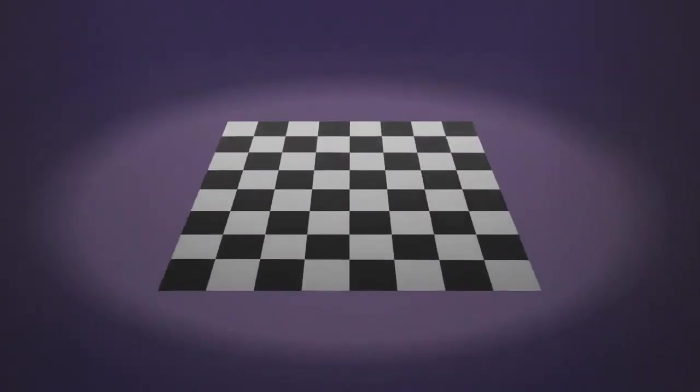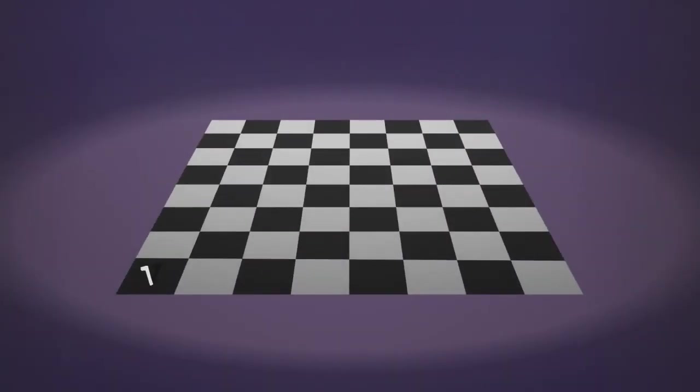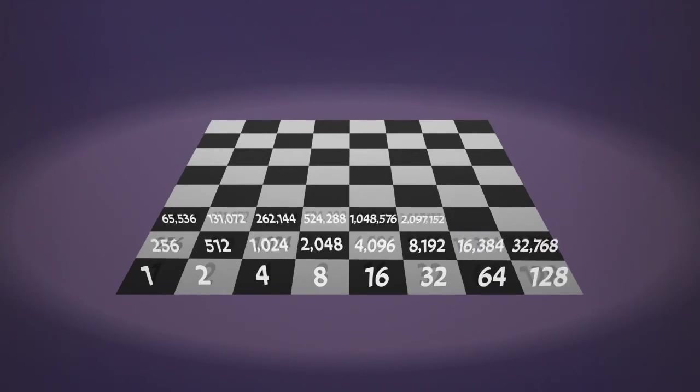If we place a single grain of rice on the first square of a chessboard, double this and place two grains on the second, double again and place four on the third, double again and place eight on the fourth, and continue this way, putting on each square twice the number of grains than were on the previous one. By the time we reach the final square, we need an astronomical number of grains.